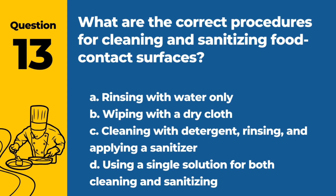Question 13. What are the correct procedures for cleaning and sanitizing food contact surfaces? A. Rinsing with water only. B. Wiping with a dry cloth. C. Cleaning with detergent, rinsing, and applying a sanitizer. D. Using a single solution for both cleaning and sanitizing. Answer: C. The correct procedure involves cleaning surfaces with detergent, rinsing them, and then applying a sanitizer.